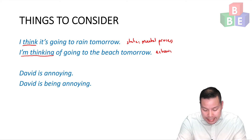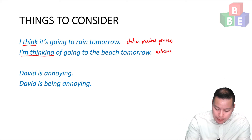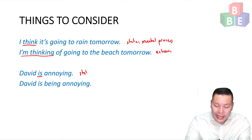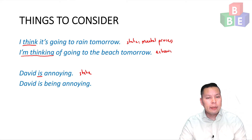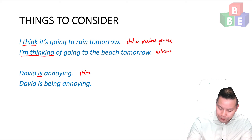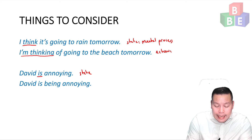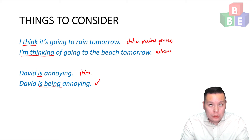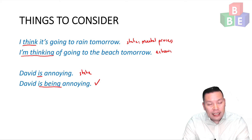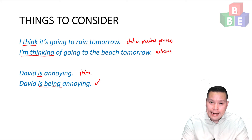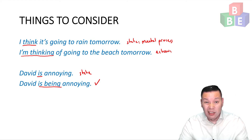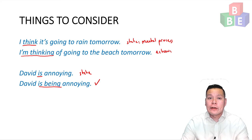Last one: David is annoying. The be verb is typically a state verb — it doesn't fit into one of the four categories; think of it as the mother of all state verbs. However, David is being annoying is correct, but it is more of an exception to the rule. This actually means that David right now is being annoying, but normally he is quite nice. So this is referring to a very, very temporary state.